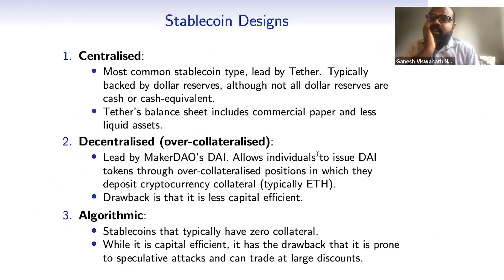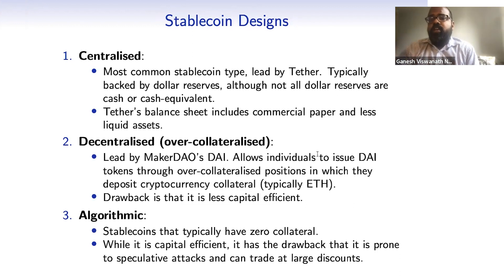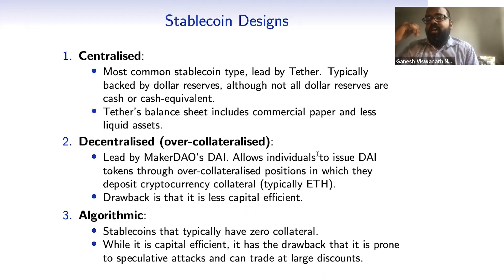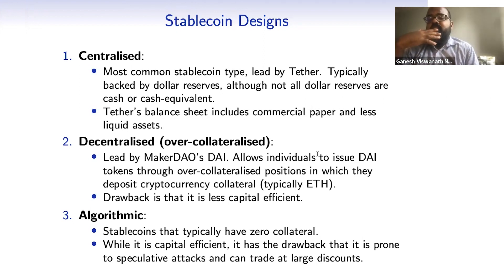Here I summarize these properties. Tether is the main stablecoin and they're backed by dollar reserves. One important point to note is that not all of the dollar assets they hold are actual reserves — there is some commercial paper and less liquid assets that Tether holds. This is the subject of much concern, particularly for regulators: how liquid are these assets, and are these assets vulnerable to market forces?